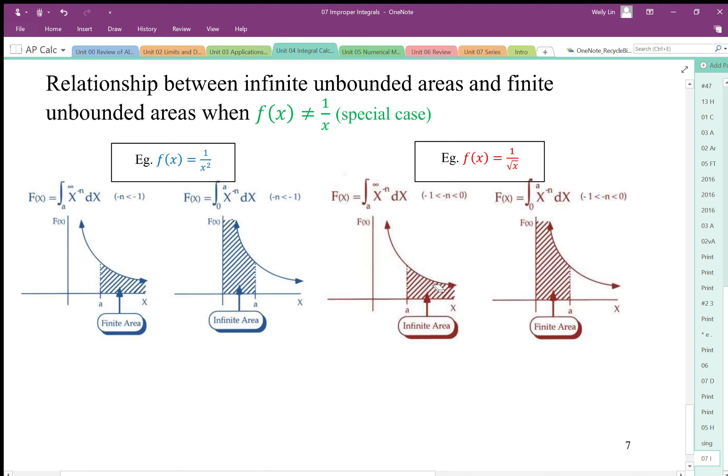And then if this unbounded area in here is infinite, the area on the opposite side then becomes finite. So this unbounded area against the asymptote then becomes finite. So in this case, it is the reverse of that.